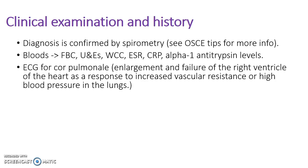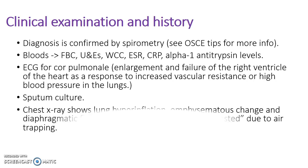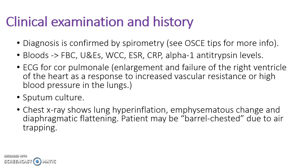Patients with advanced COPD may show signs of cor pulmonale including raised JVP, tricuspid regurgitation, peripheral oedema, and hepatomegaly — all things to check in your OSCEs. Send sputum culture, particularly if the patient is producing significant sputum. Chest X-ray will show lung hyperinflation, and patients may be barrel-chested due to air trapping. Googling COPD chest X-rays will provide useful examples.